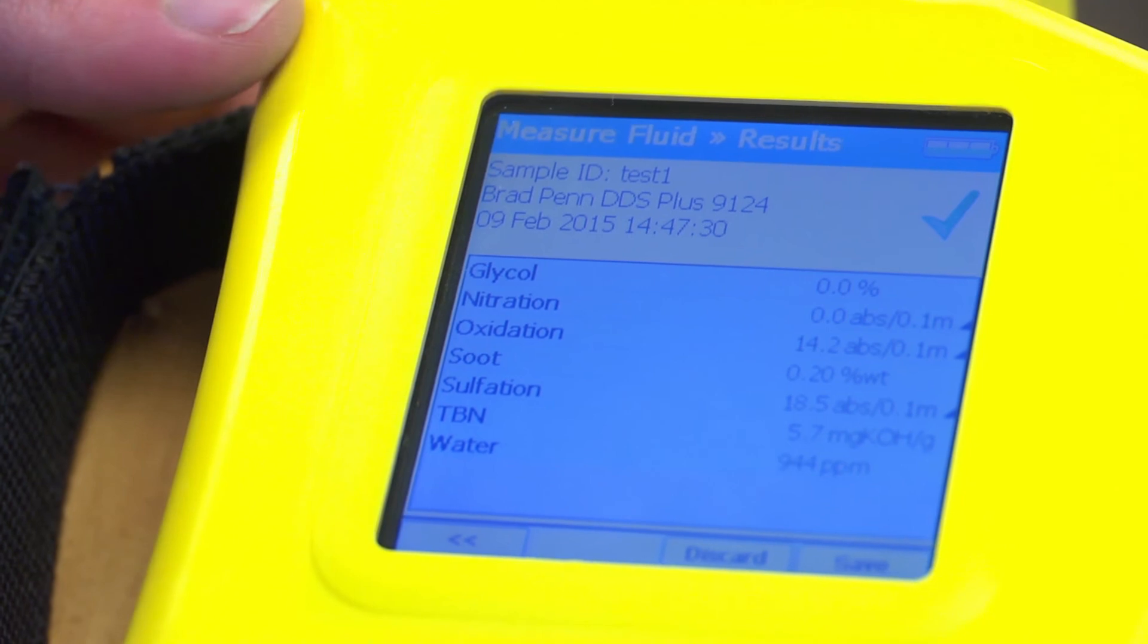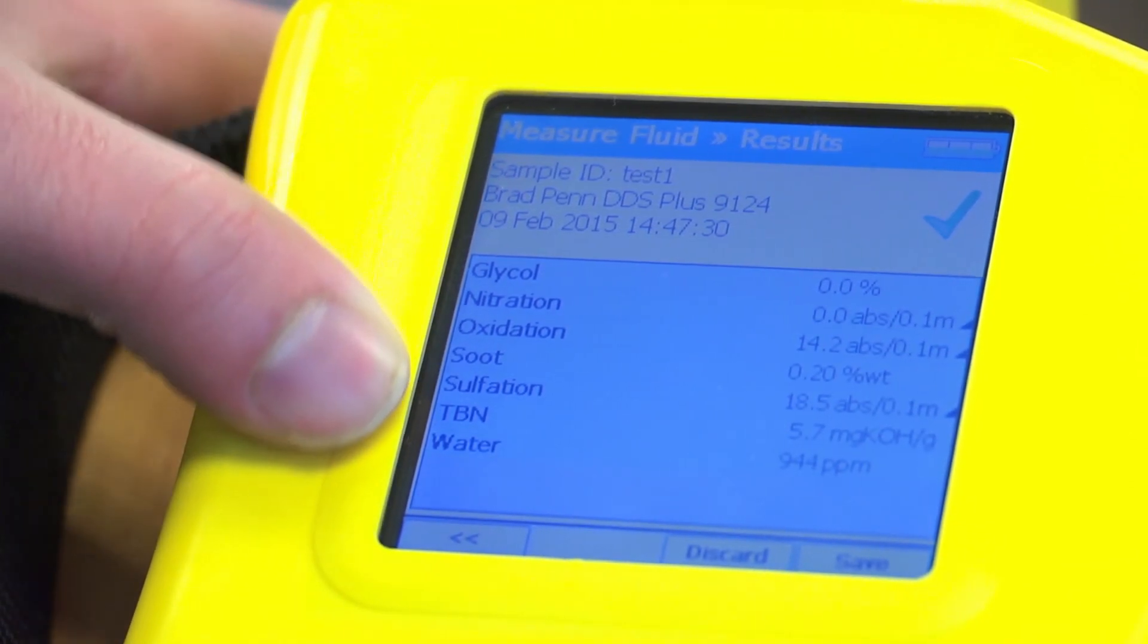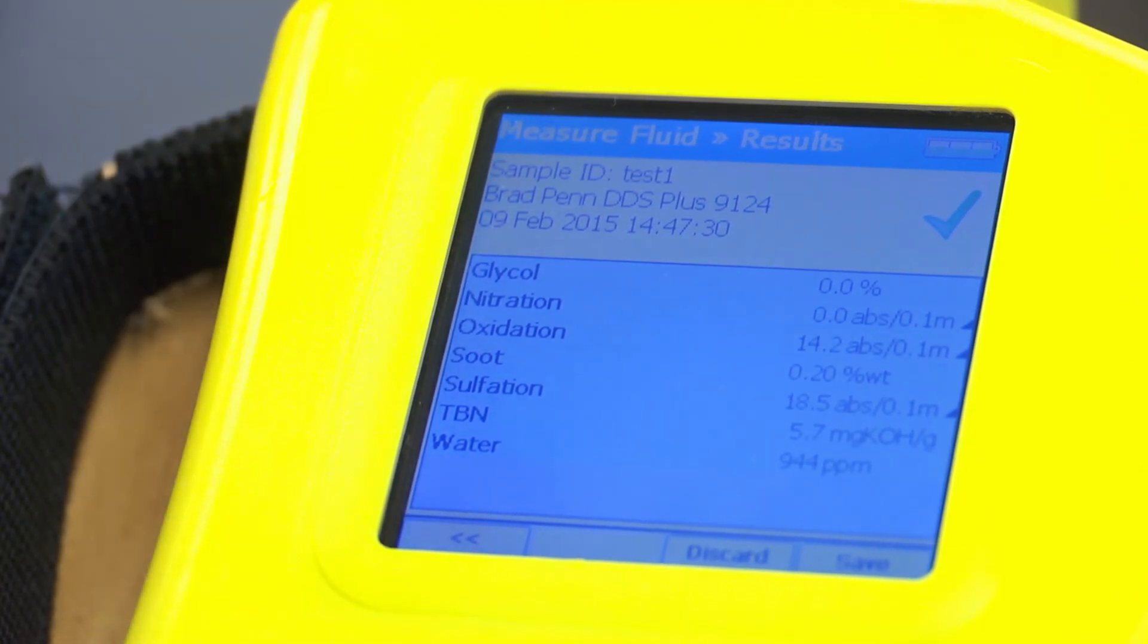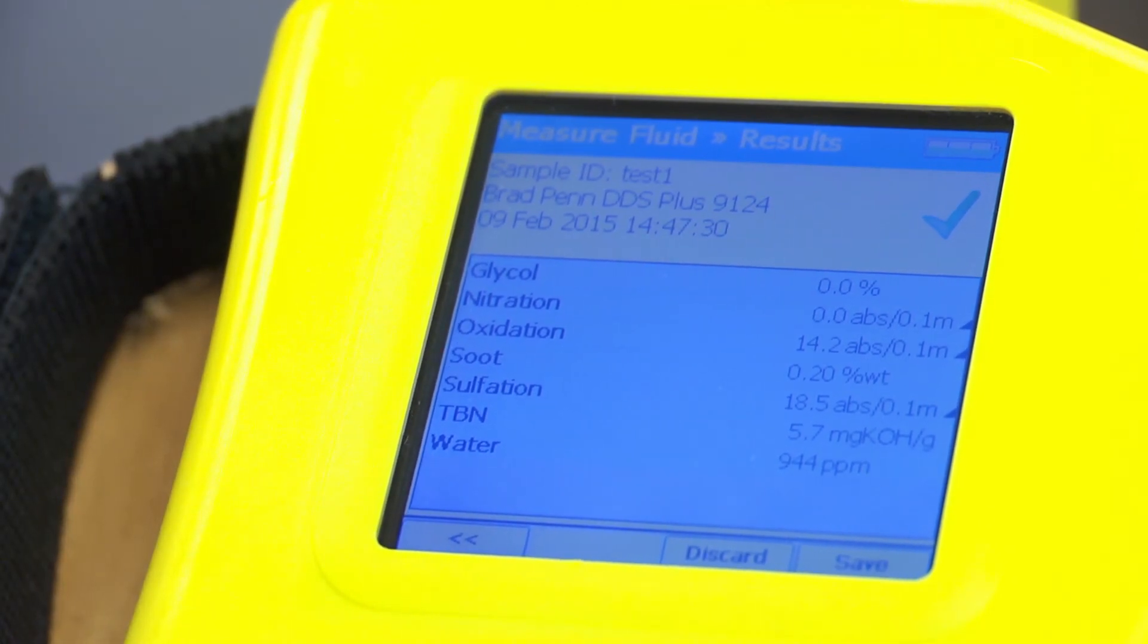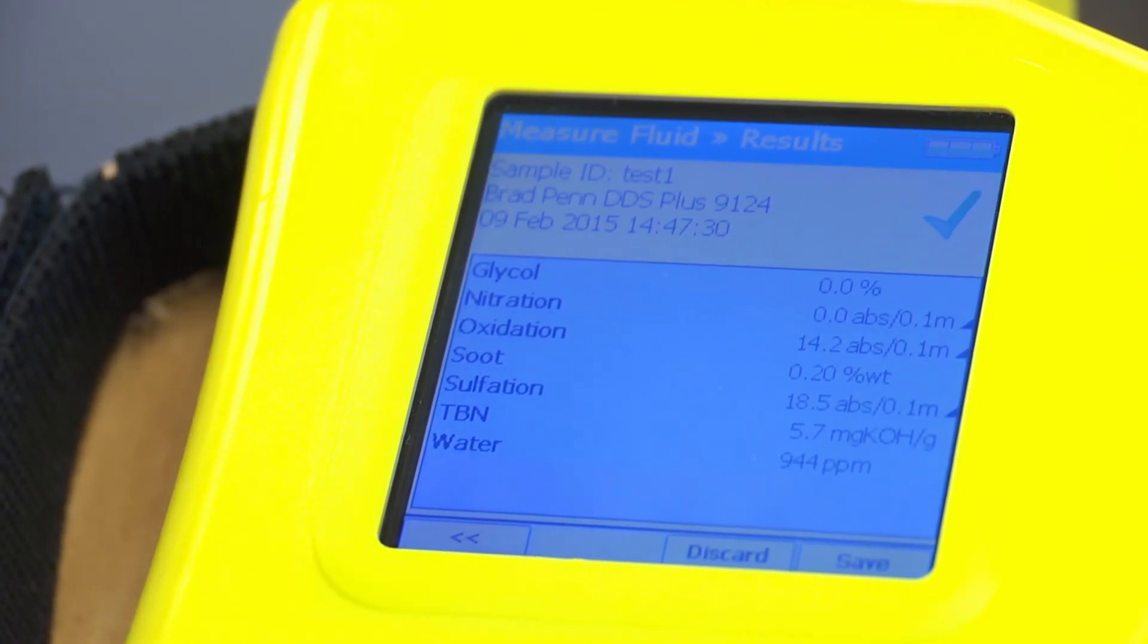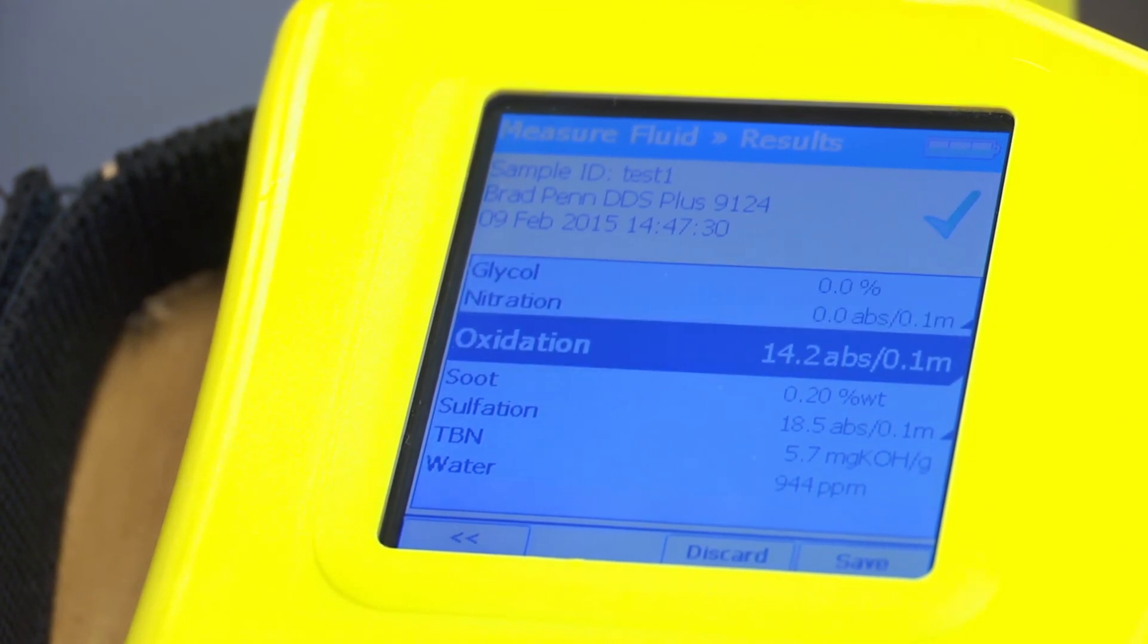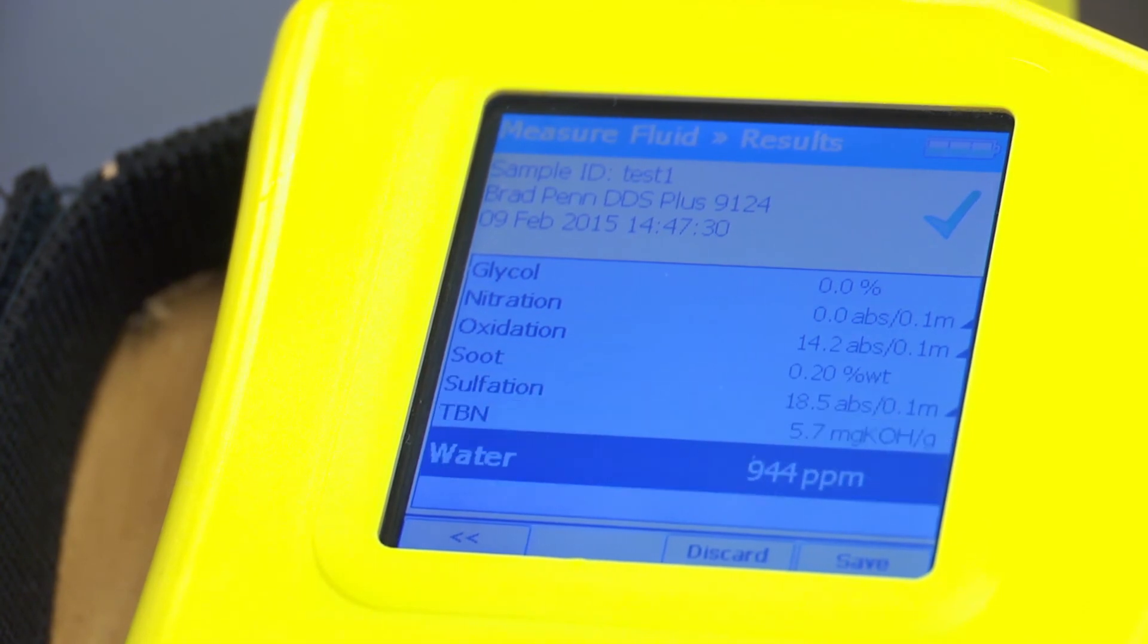Now once the results come up, you will see that there is a parameter listed for each oil. These parameters are preselected based on the category the oil belongs to. For example, for an engine oil, typically standard industrial parameters include glycol, nitration, oxidation, soot, sulfation, TBN, and water.